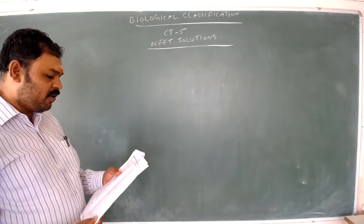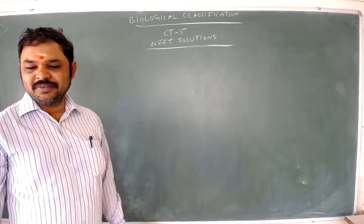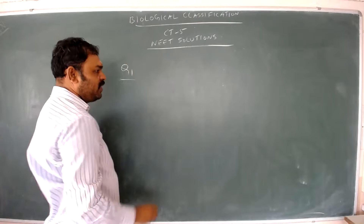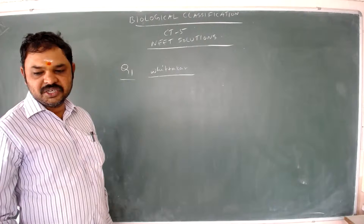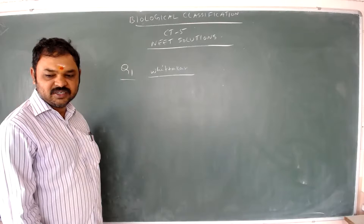Question number one: the system of classification suggested by R.H. Whittaker is not based on which criterion? Whittaker's classification is based on five characters: cell structure, body organization, mode of nutrition, reproduction, and phylogenetic relationship.